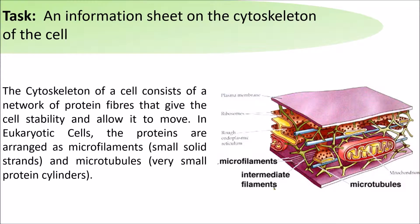The cytoskeleton of a cell consists of a network of protein fibres that give the cell stability and allow it to move. In eukaryotic cells, the proteins are arranged as microfilaments and microtubules.